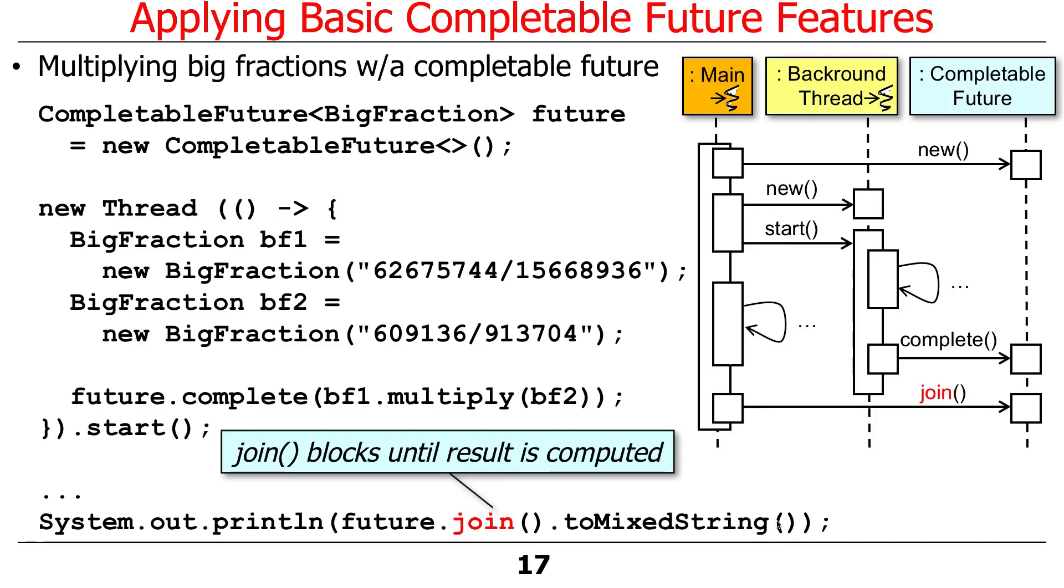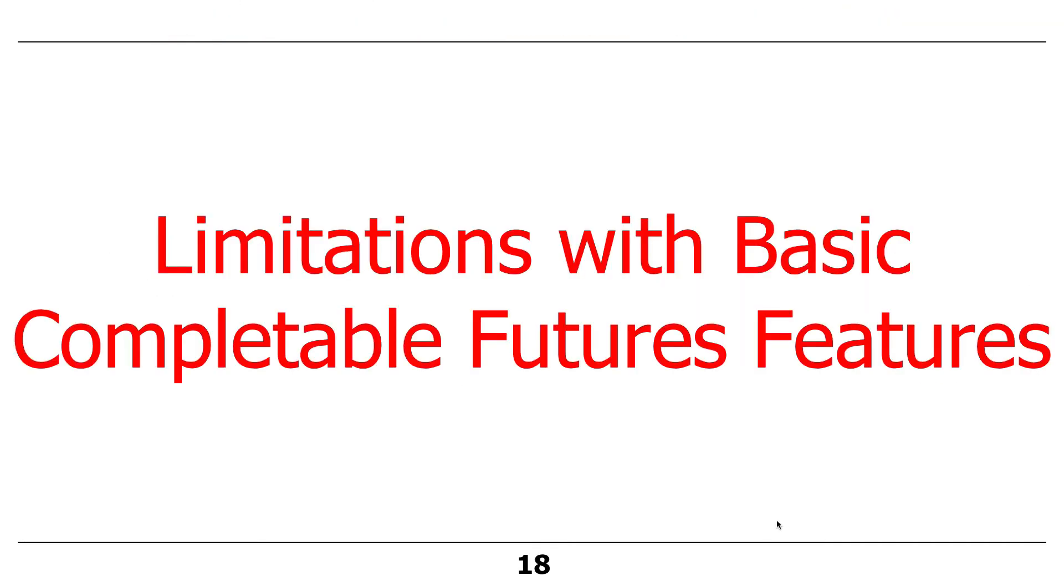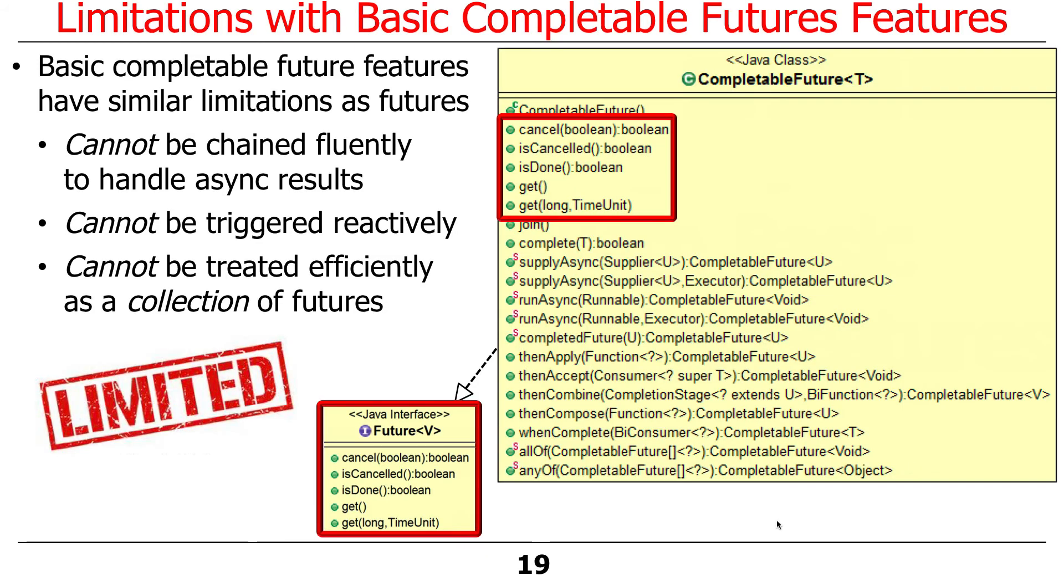All right. So that's a very simple example. We'll look at some more interesting examples in a second. So there's a bunch of limitations with the basic stuff. And in particular, the basic features of futures, completable futures, are really not that much different from the limitations with the basic features of futures. So we can't chain the results together fluently to handle asynchronous results as a chain.